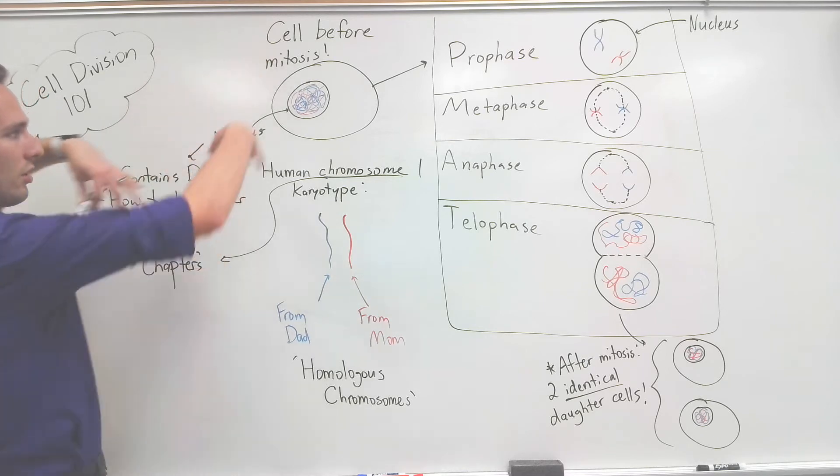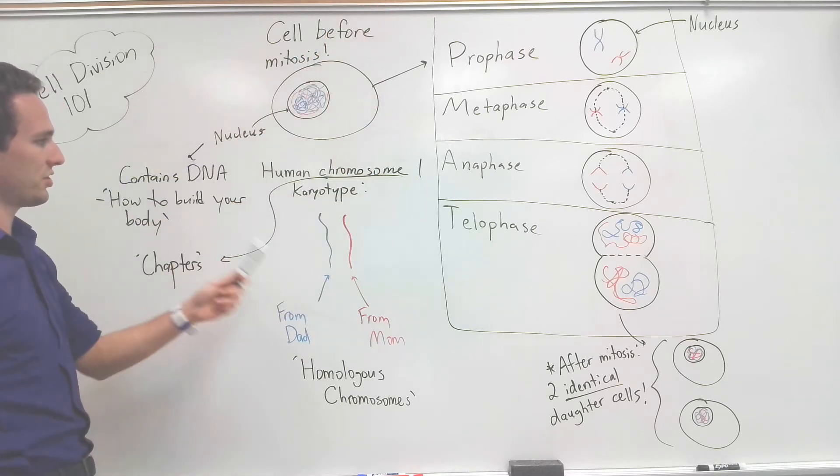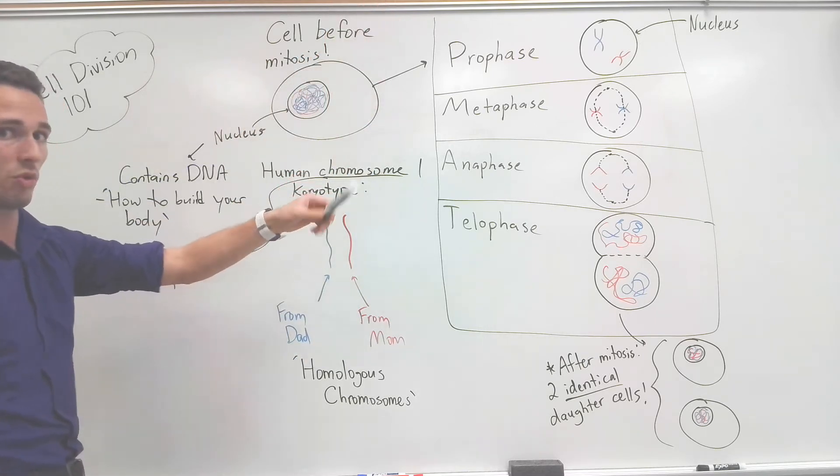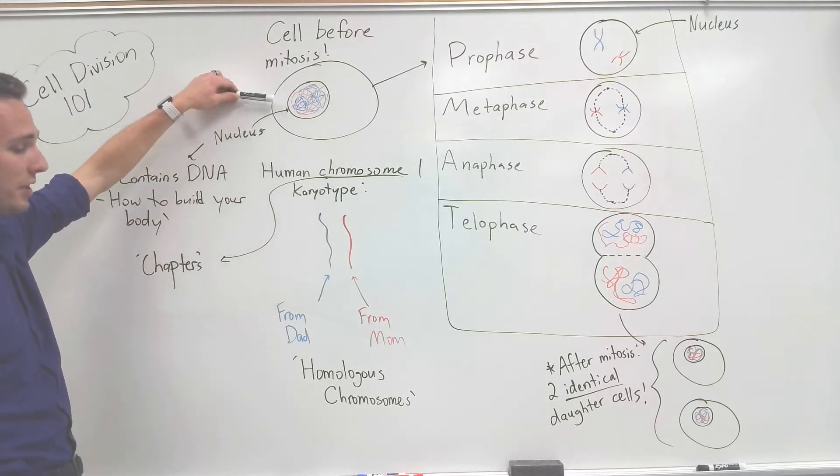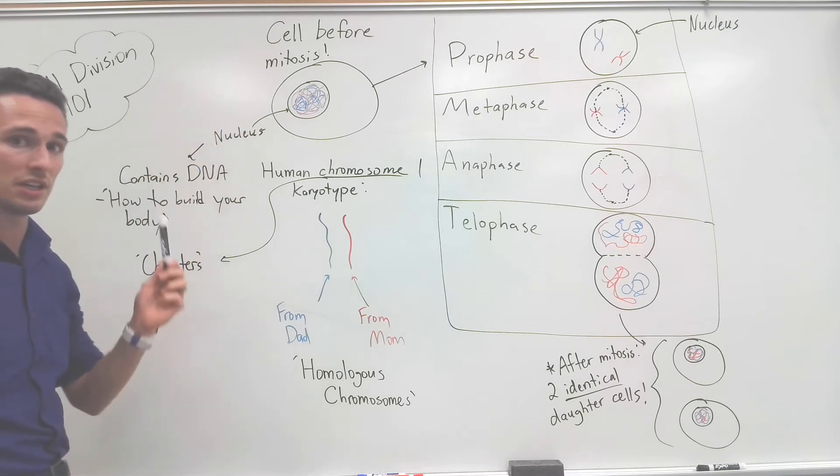First off, you will see that a normal nucleus will have all the DNA wrapped and wound out. And for this situation, I'm only going to talk about chromosome one. Again, you'd have 23 pairs of these, so this is just an example. The first thing that has to happen is DNA must be replicated.